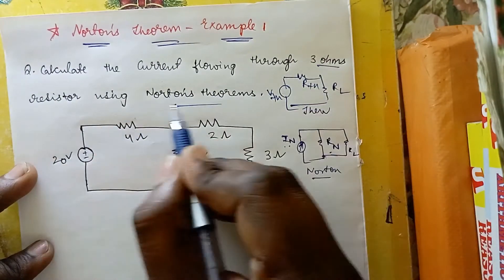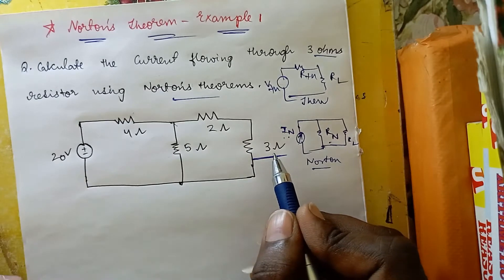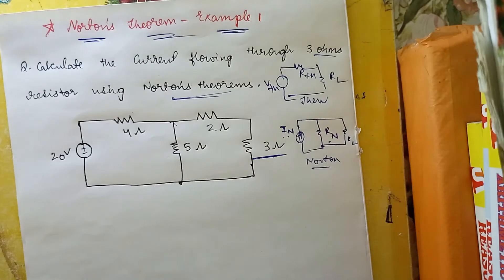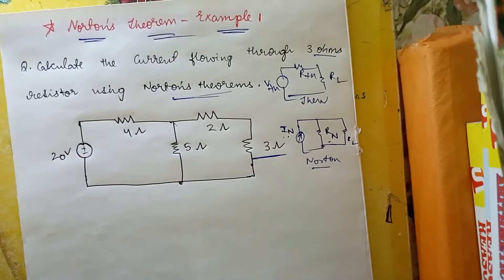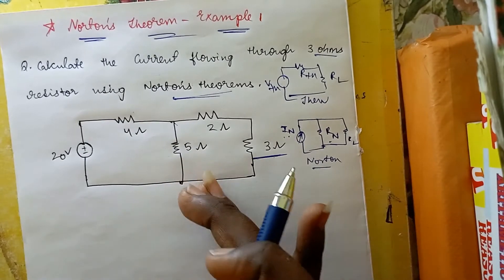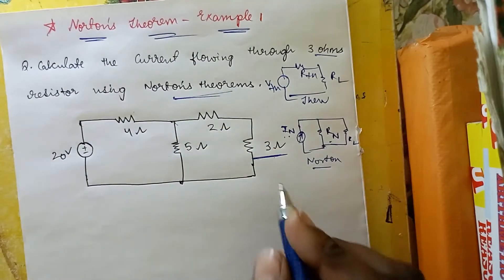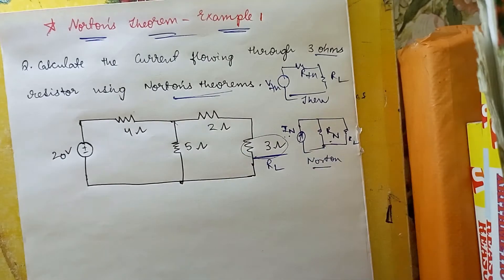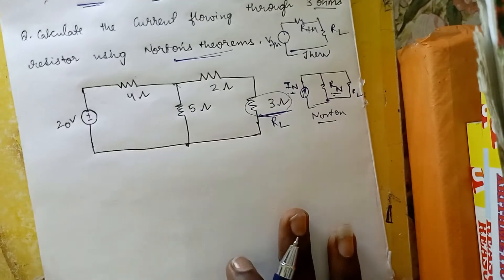To understand Norton's theorem clearly, let's go with an example. The problem is: calculate the current through the 3-ohm resistor using Norton's theorem. This same question was previously solved using Thevenin's theorem. Now we are solving it using Norton's theorem. The 3-ohm resistor becomes your load resistance, and we need to find Rn and In.